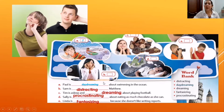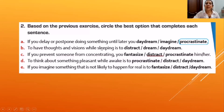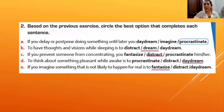After students complete the sentences with the matching letters, they then circle the best option to complete additional sentences — for example, choosing between words meaning 'postponing something' or 'dreaming' — completing the sentences according to the meaning established in the previous exercise.